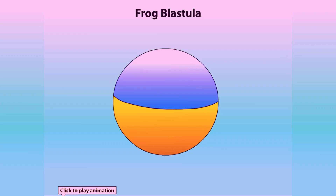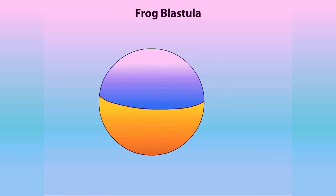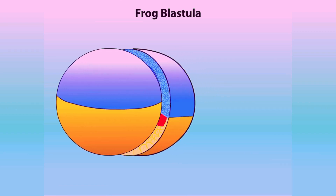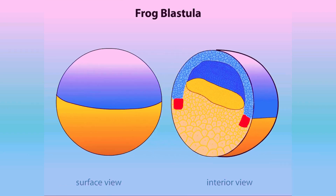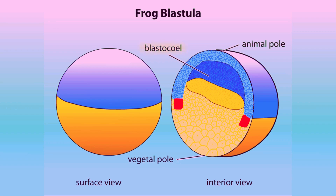Let's look at the process of gastrulation in frog — how exactly gastrulation is done. If we look at a cross-section of an embryo of frog Xenopus, we can see that at this point it is a ball of cells with a fluid-filled cavity. The cavity is the blastocoel, and the embryo is in the blastula stage of development.